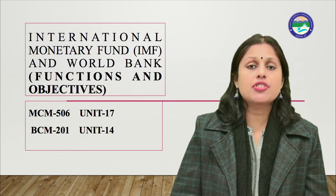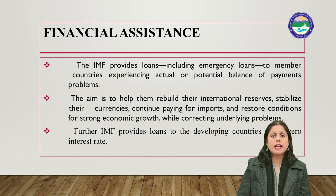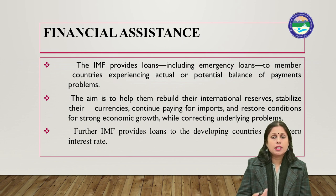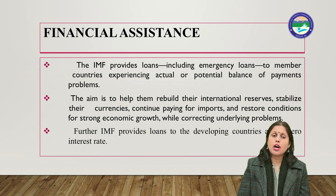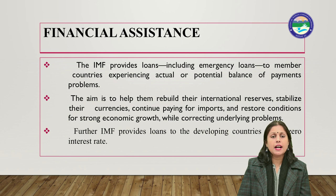The next function is financial assistance. The IMF provides loans, including emergency loans, to member countries experiencing actual or potential balance of payment problems. The aim is to help them rebuild their international reserves, stabilize their currencies, continue paying for imports, and restore conditions for strong economic growth while correcting underlying problems.